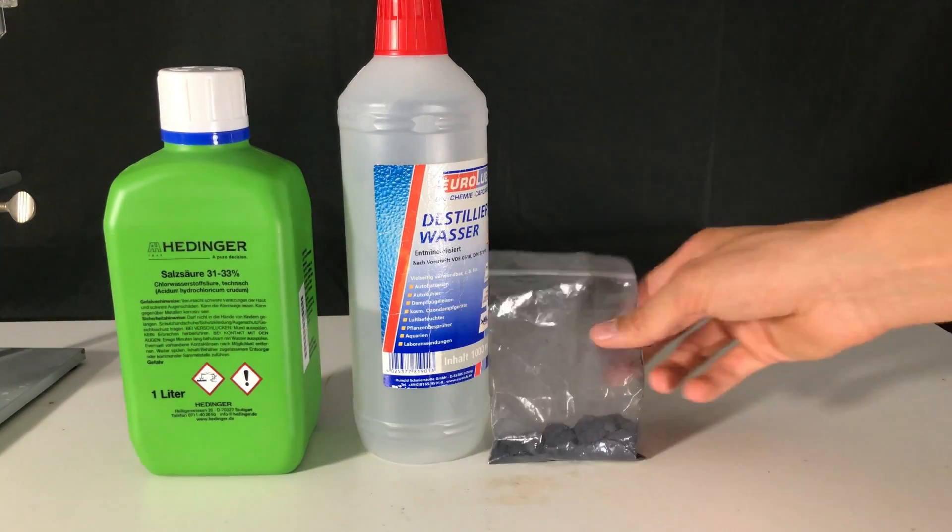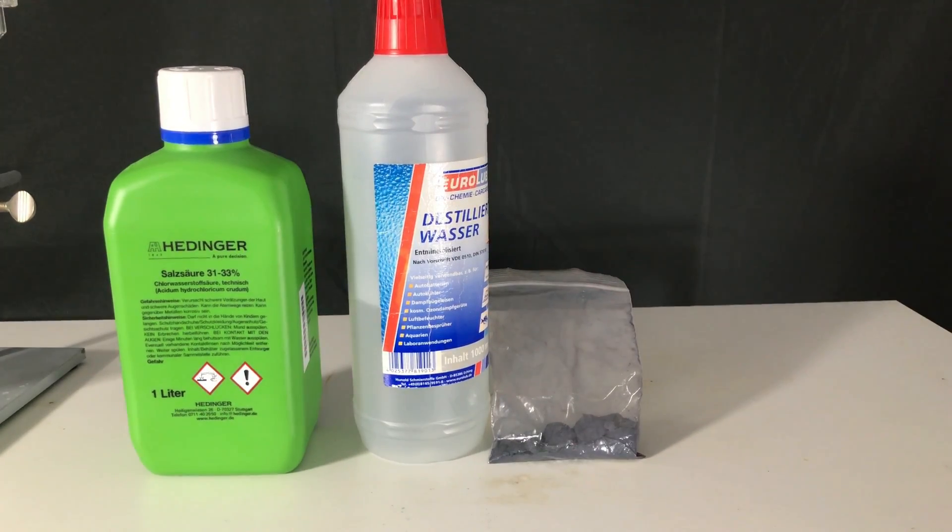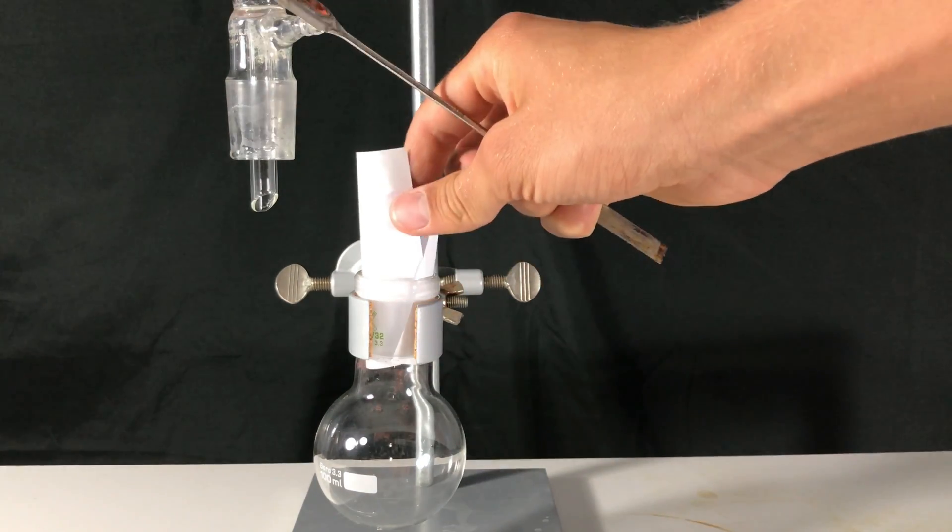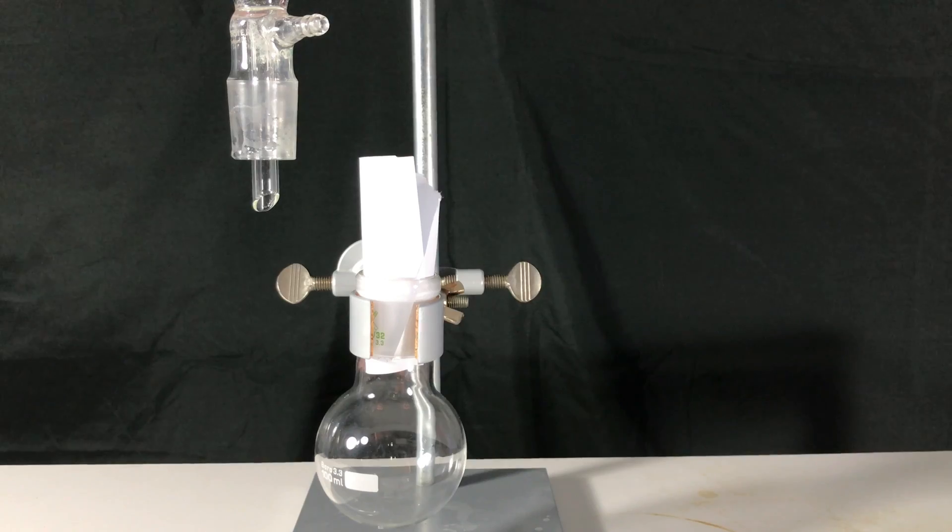As silane is toxic, you should not try this experiment at home. We start off by filling a 100 mL round bottom flask with a bit of our magnesium silicide.